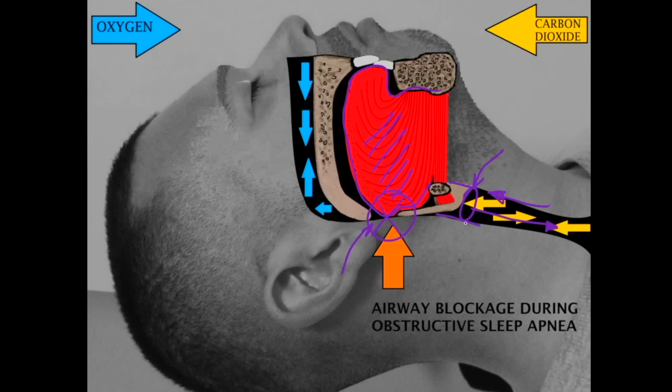How would you know that someone has sleep apnea? Snoring, or their bed partner witnessing that they stop breathing at night. They gasp for air. They wake up in the morning with headaches. They don't feel well rested. They fall asleep very easily while not really being engaged, or it could be more subtle things like fibromyalgia, body aches, or low energy.